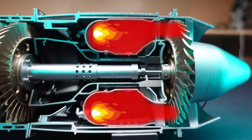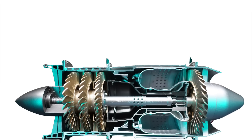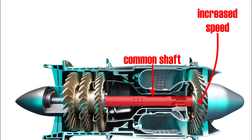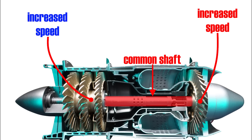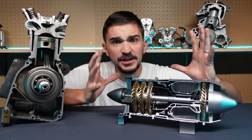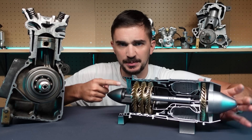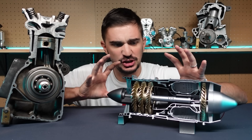The turbine captures, or harnesses, this energy, which causes it to rotate at increasing speed. The turbine is connected via a common shaft with the compressor section, meaning that increased turbine speed leads to increased compressor speed. A faster-spinning compressor sucks in even more air, which is fed into the combustor, increasing the strength of combustion, which again increases turbine speed even more. The jet engine creates a sort of vicious cycle — the faster the turbine spins, the more powerful the combustion; the more powerful the combustion, the faster the turbine spins. The engine is feeding itself.